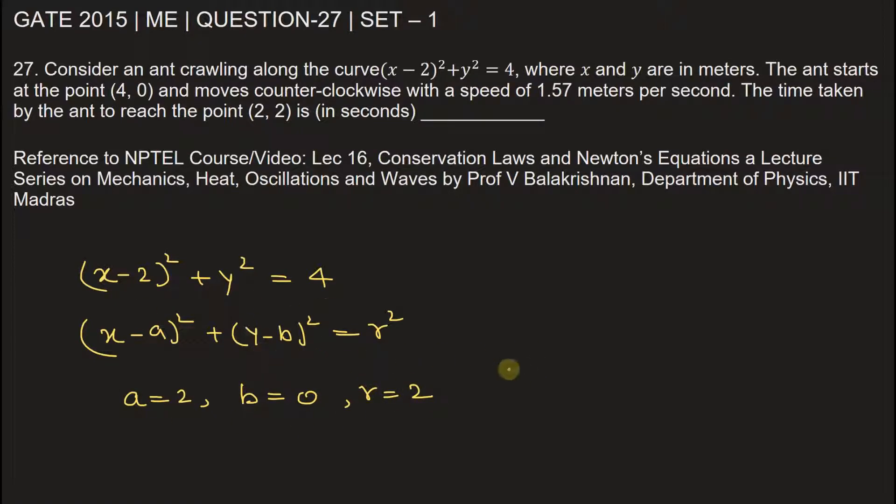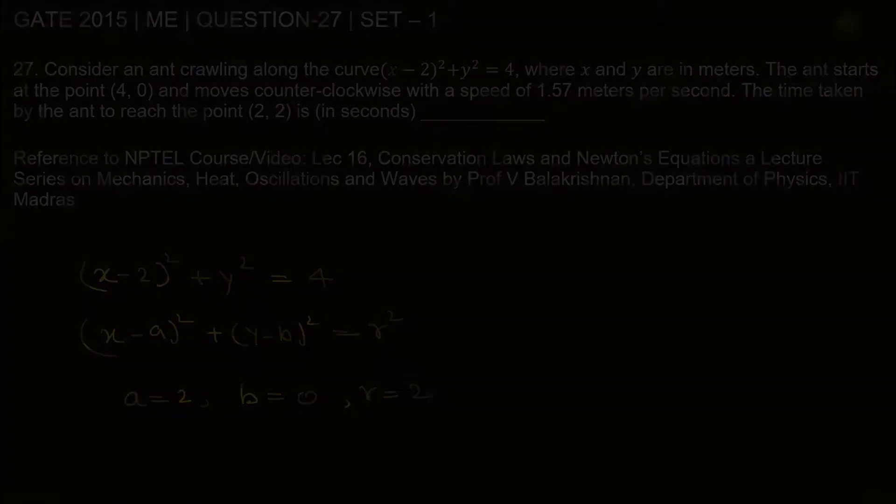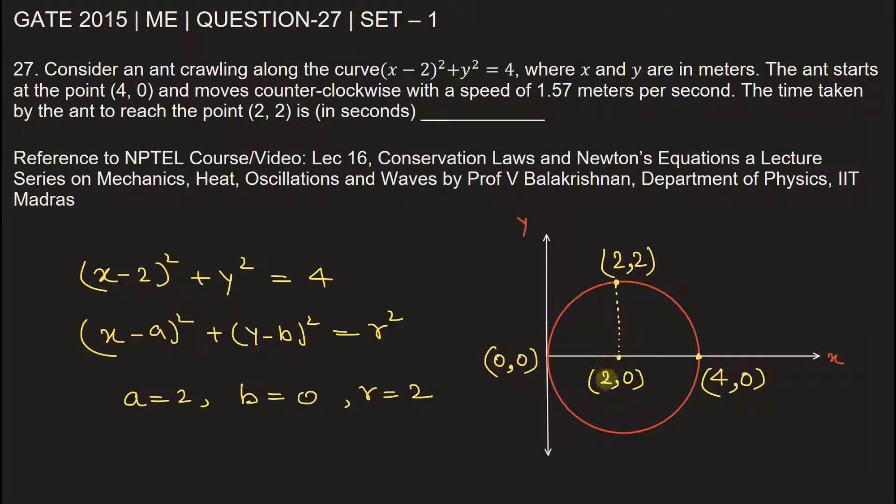So now let's make this diagram on the xy-plane. This is the equation of a circle centered at (2, 0) with a radius of 2 meters.